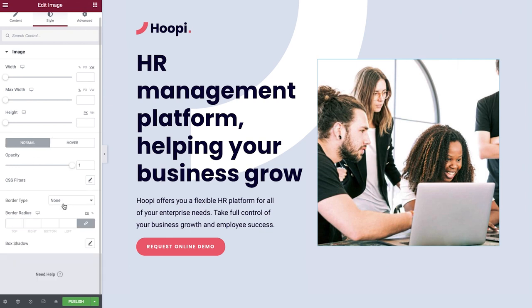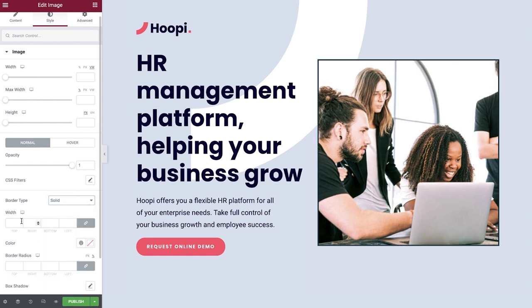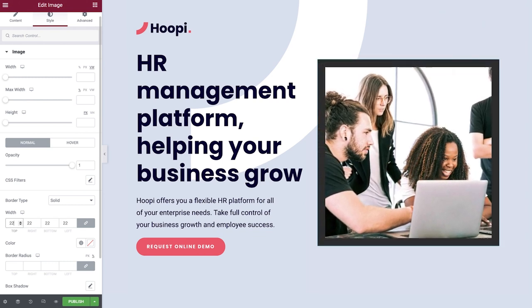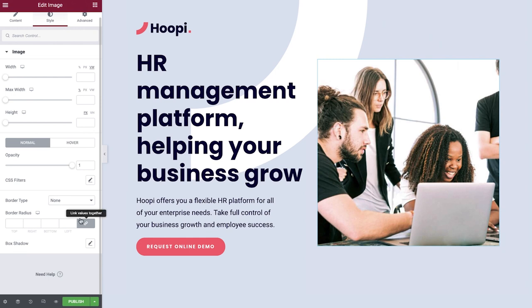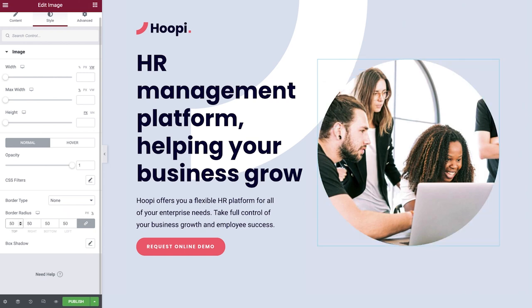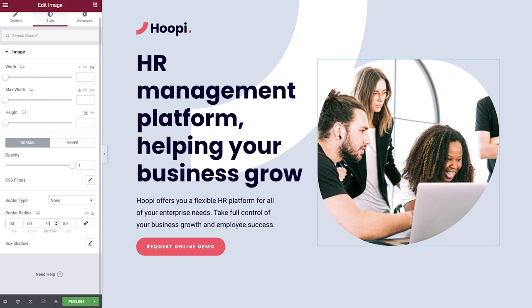The next option is Border Type, where you can choose from several different border styles. Enter a value for the border width below. These values are linked by default, but you can click the link icon to unlink them and enter separate values for any side. I'll go ahead and remove the border by setting it back to None. Next, we'll adjust the border radius to round the corners and create a circular shape. Switch the unit to percent and type in 50. You can also unlink the values and enter them separately to create different shapes. I'll go ahead and relink the values and set it back to 50.